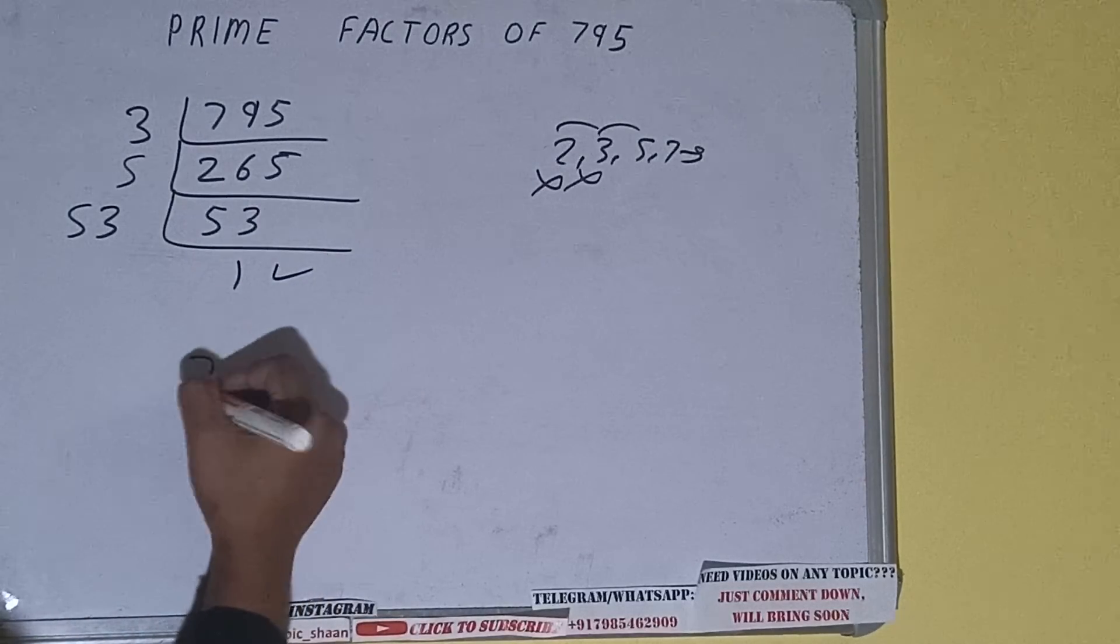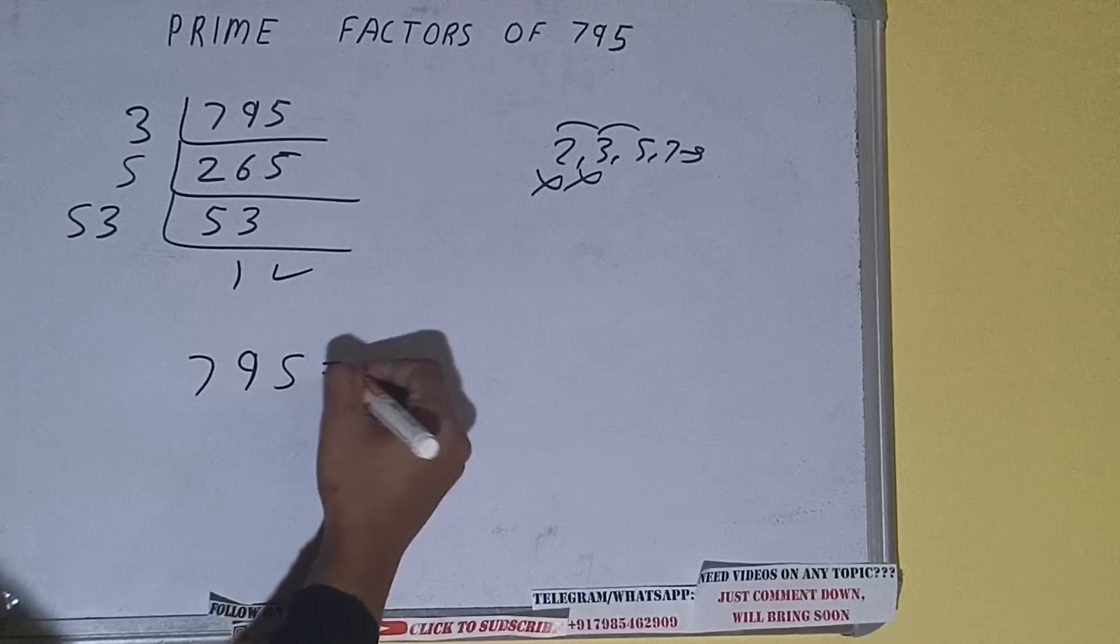Now we do one last thing: the prime factors of 795 equal whatever we have on the left-hand side, that is 3 × 5 × 53. That will be the answer.